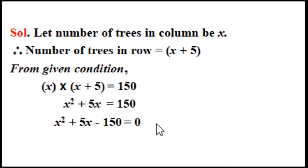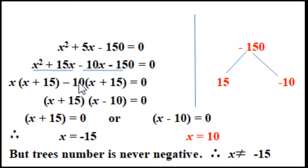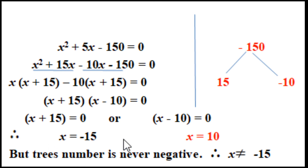We solve by factorization. We need two factors whose product is minus 150 and sum is plus 5. The factors are 15 and minus 10. Replacing 5x: x squared plus 15x minus 10x minus 150 equals 0. Taking common: x(x plus 15) minus 10(x plus 15) equals 0, giving (x plus 15)(x minus 10) equals 0. So x equals minus 15 or x equals 10. But the number of trees is never negative, so this option lapses.